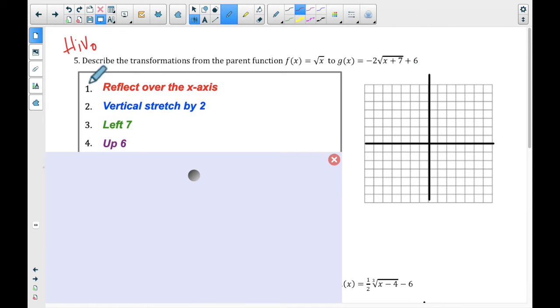Okay, remember HAIVO stands for Horizontal Inside Vertical Outside. So anything outside is vertical. That means like up and down. So the first one, the negative, is going to reflect it over the x-axis. The 2 is going to be a vertical stretch by 2, and that's making it longer, taller.